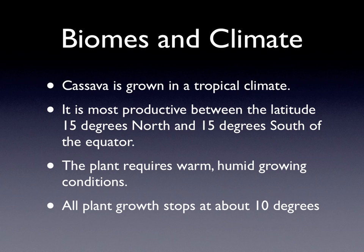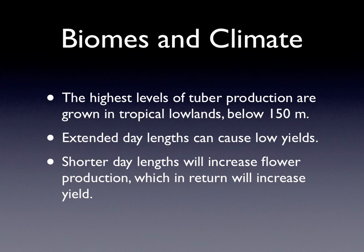Cassava is grown in a tropical climate. It is most productive between the latitude 15 degrees north and 15 degrees south of the equator. The plant requires warm, humid growing conditions. All plant growth stops at about 10 degrees. The highest level of tuber production is grown in tropical lowlands below 150 meters.